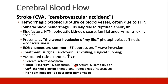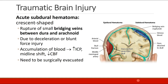A cerebral artery vasospasm is like an ischemic stroke and can be catastrophic. There are two main kinds of hematomas: epidural and subdural. A subdural hematoma is typically crescent-shaped and occurs when there is rupture of the small bridging veins between the dura and the arachnoid layers. This injury commonly occurs due to a deceleration or blunt force injury. As blood accumulates, intracranial pressure will increase, a midline shift can occur, and cerebral blood flow will decrease. Subdural hematomas typically need to be surgically evacuated.